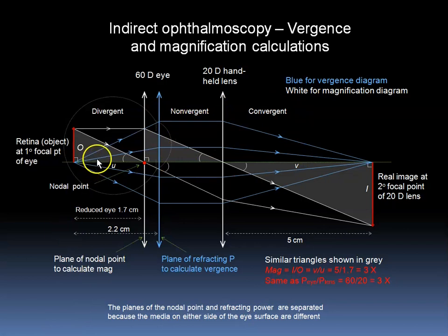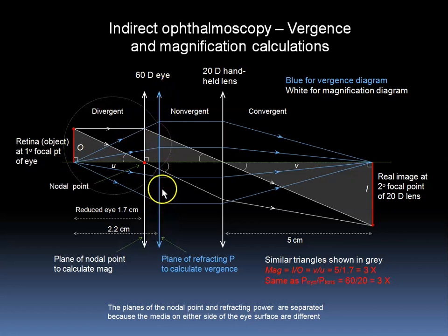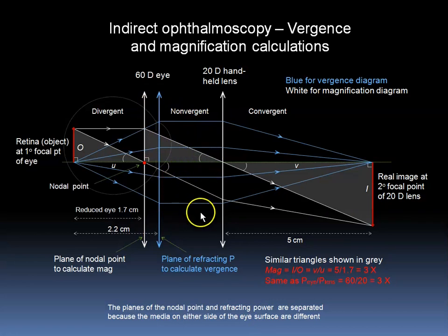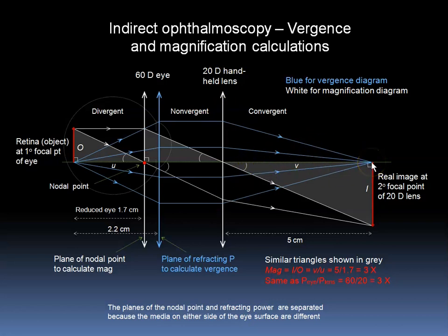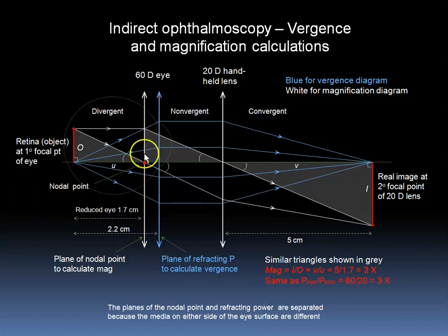The vergence is shown in blue. The light is divergent. It reaches the overall simplified optics shown here as 60 diopters at this plane and comes out non-vergent. It enters the 20 diopter lens, which then converges the light towards the secondary focal point of this lens, which is 5 cm away. This is a real inverted image.